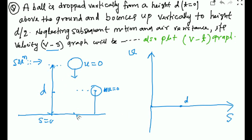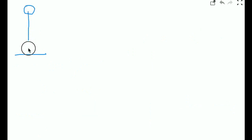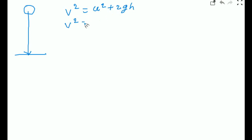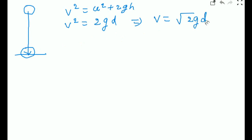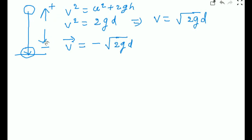We have one point where velocity is 0. For the velocity when the ball reaches the ground, we use v² = u² + 2gh, where u=0. So v² = 2gd, giving velocity = √(2gd). But since velocity is a vector quantity, and downward is the negative direction, we must write the velocity as −√(2gd).